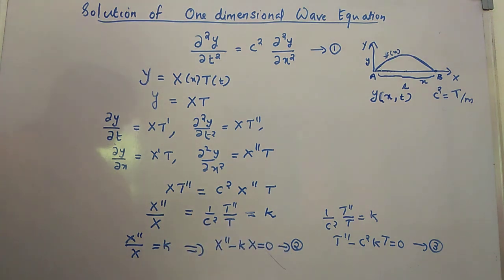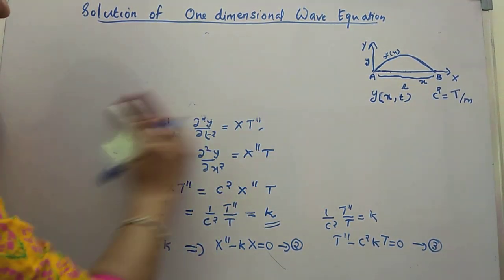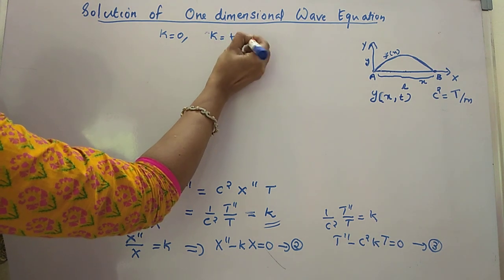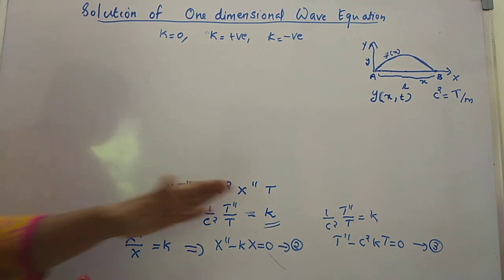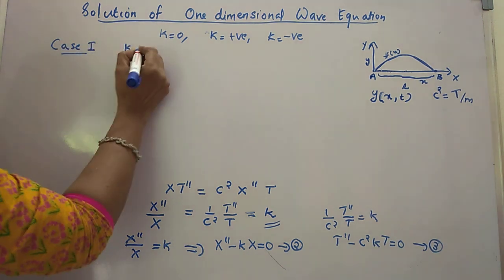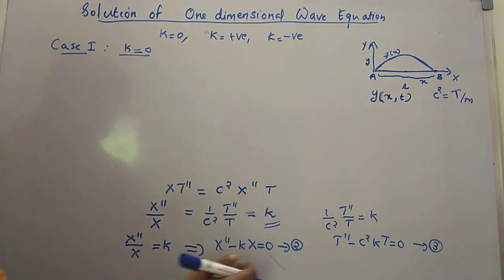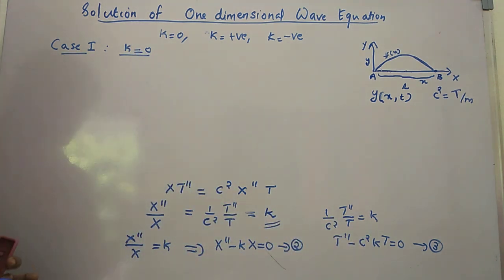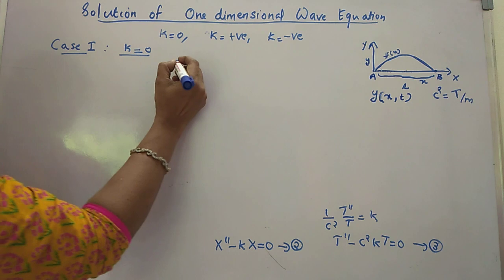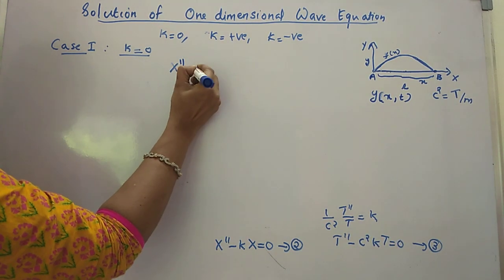Before solving, recall that the constant K can take three values: K = 0, K positive, or K negative. We consider each case. Case 1: K = 0. Equation 2 gives X'' = 0, which is an ordinary differential equation in x alone.